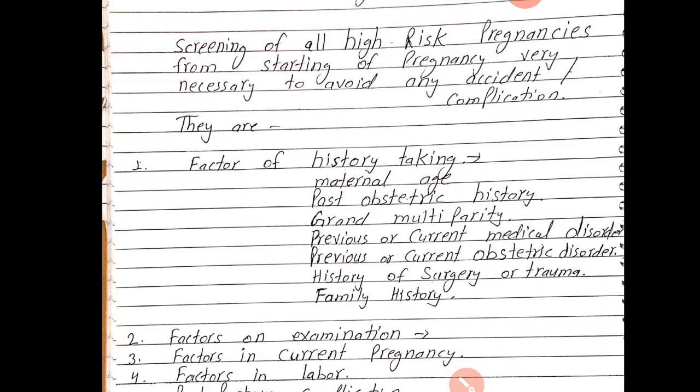Fifth is previous or current obstetrical disorder. Uske pehle ke aur abhi ke obstetrical disorders ki history lenge — antepartum hemorrhage, intrauterine growth restriction, premature rupture of membranes, polyhydramnios, oligohydramnios, ya post-term pregnancy jaisi koi condition ho to.